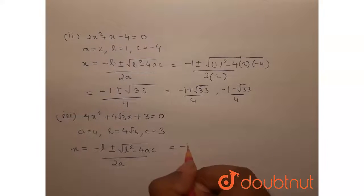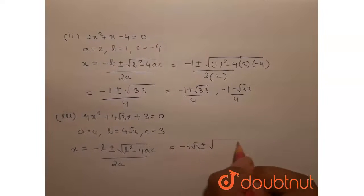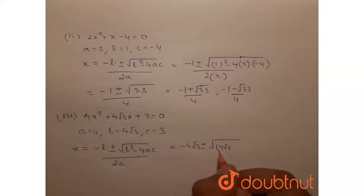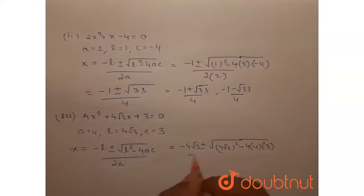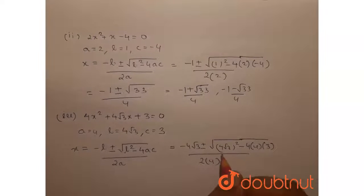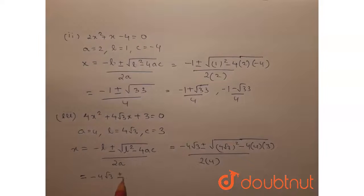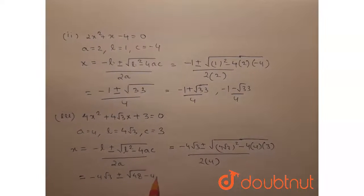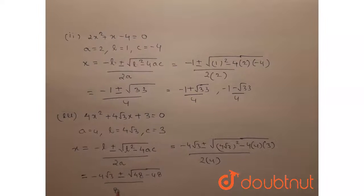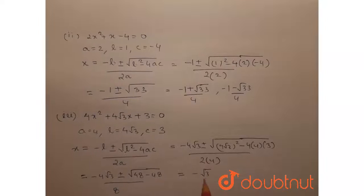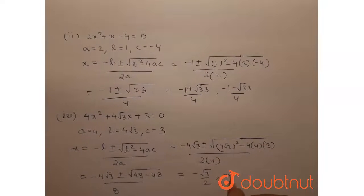This equals minus 4 root 3 plus or minus root of (4 root 3) squared minus 4 into 4 into 3, all by 2 into 4. This becomes minus 4 root 3 plus or minus root of 48 minus 48, which is 0. So the discriminant is 0, meaning we have equal roots. The roots of this equation are minus root 3 by 2 and minus root 3 by 2.